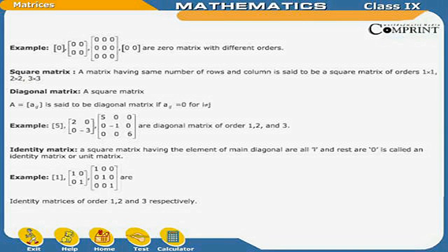Identity matrix: A square matrix having the elements of the main diagonal all equal to 1 and the rest equal to 0 is called an identity matrix or unit matrix. For example, [1], and the matrix [1, 0; 0, 1] are identity matrices of order 1 and 2 respectively.